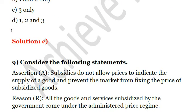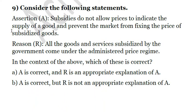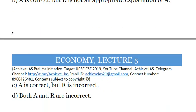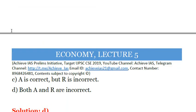Question 8 — Assertion: Subsidies do not allow prices to indicate the supply of a good and prevent the market from fixing the price of a subsidized good. Reason: All goods and services subsidized by the government come under an administered price regime. Both the Assertion and Reason are incorrect. Answer: D.